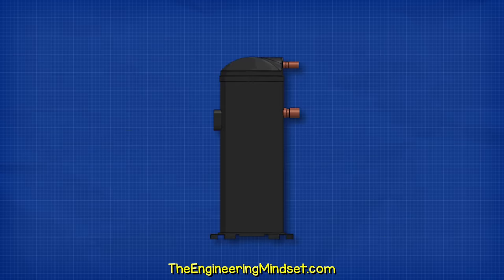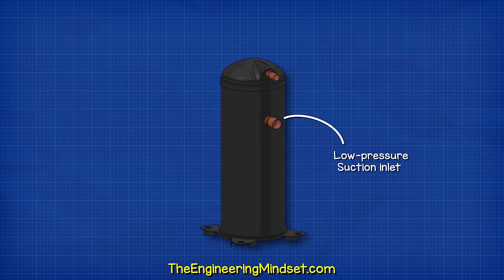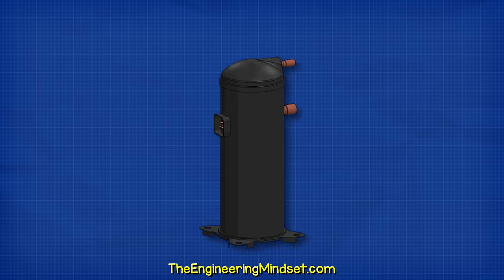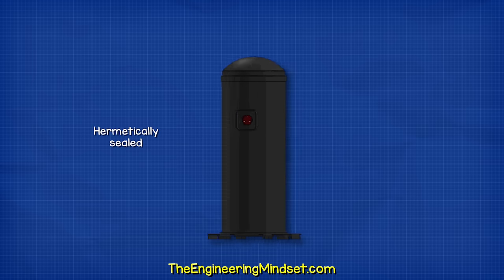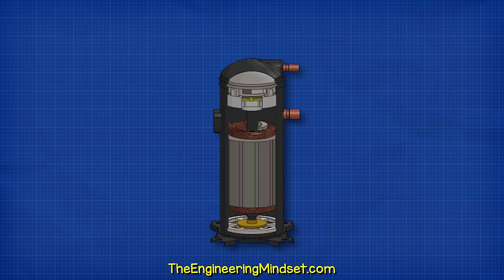When we look at the compressor, we have the main protective shell. We also find the low-pressure suction inlet and the high-pressure discharge outlet. There is also an electrical connection for the power supply and controls. This is hermetically sealed, meaning all the components are sealed inside, so we can't access them, but also dirt can't enter and the refrigerant can't escape.